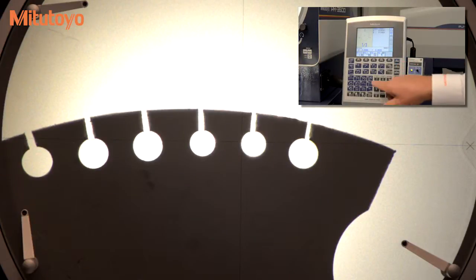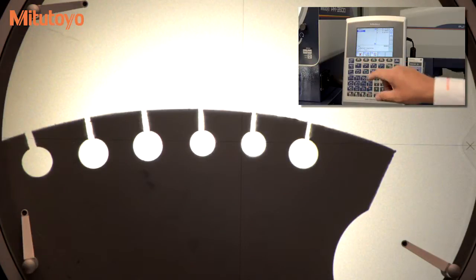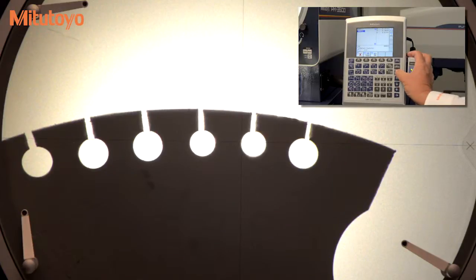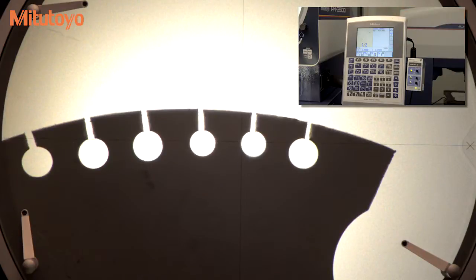Now, select the line function and recall the last two features that you have measured. The optional QM Data 200 will use the centers of the circles just measured and calculate the true distance between centers, regardless of the orientation of the coordinate system.